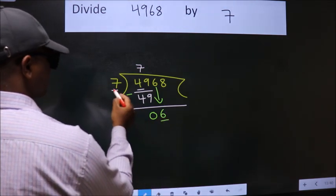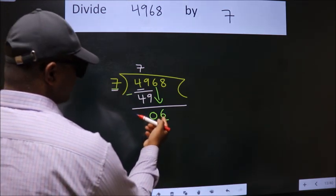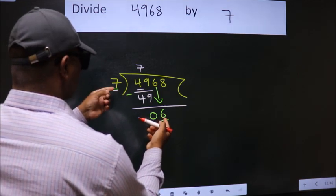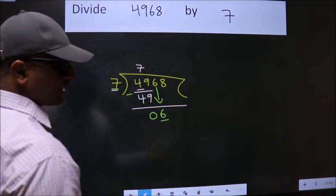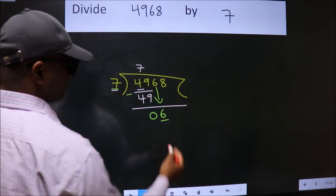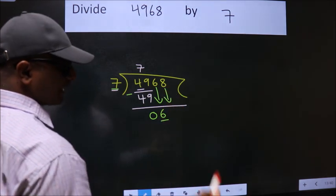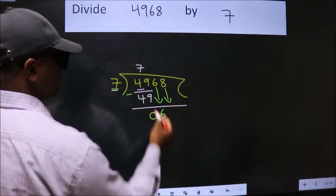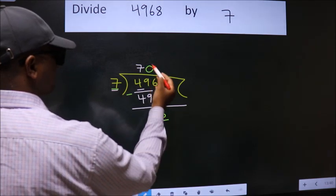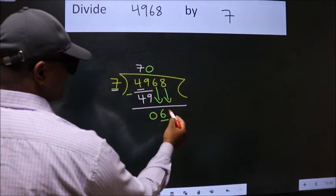Here we have 6, here 7. 6 is smaller than 7, so we should bring down the second number. The rule to bring down the second number is to put 0 here. Then only we can bring down this number.